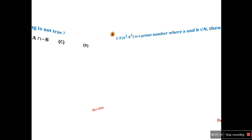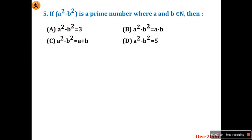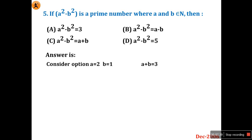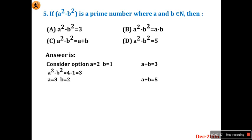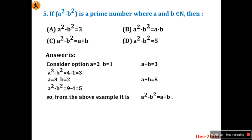Next we will move to question number 5. If A squared minus B squared is a prime number where A and B belong to N, then what is your option? A squared minus B squared equals 3, or A squared minus B squared equals A minus P, or A squared minus B squared equals A plus B, or A squared minus B squared equals 5? Let us assume and take some options. Consider A equals 2, B equals 1. So A squared minus B squared means 2 squared minus 1 squared is 4 minus 1 is 3, so A squared minus B squared equals 3. Look at one more: A equals 3, B equals 2. So A plus B equals 5. A squared minus B squared: 3 squared is 9, 2 squared is 4, 9 minus 4 is 5. So again you will get A squared minus B squared equals A plus B. So option C is the right answer.